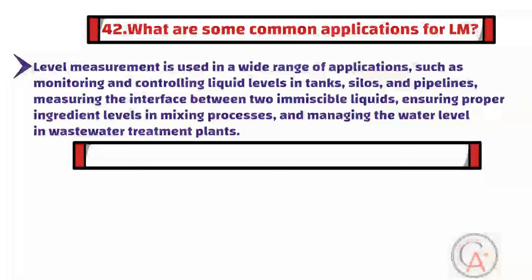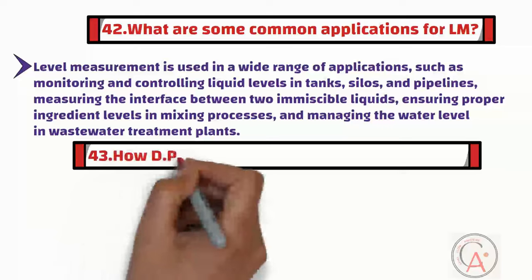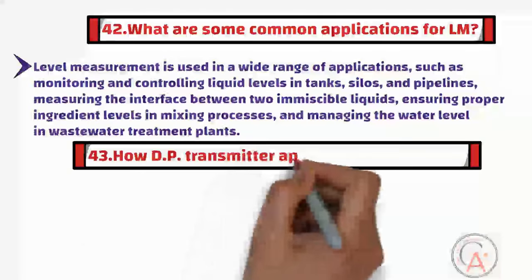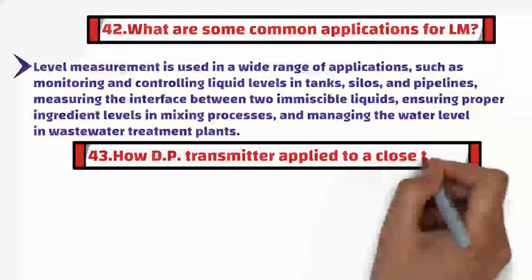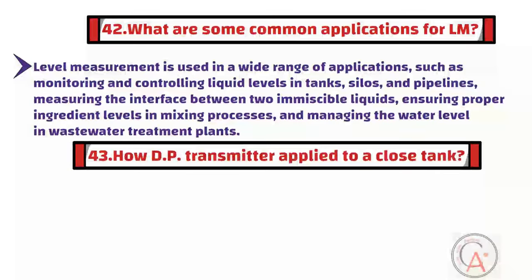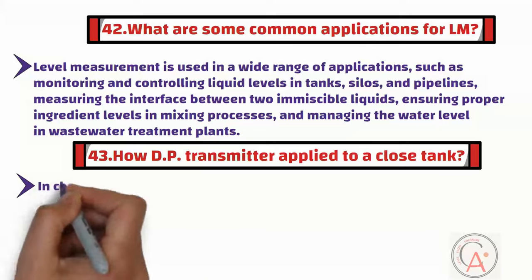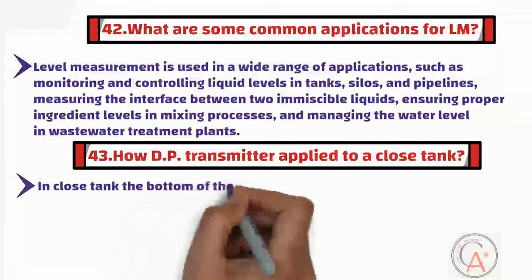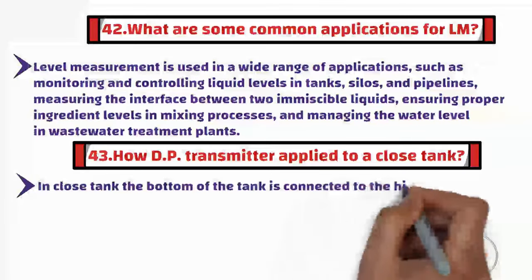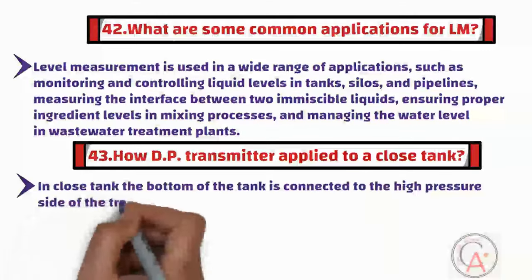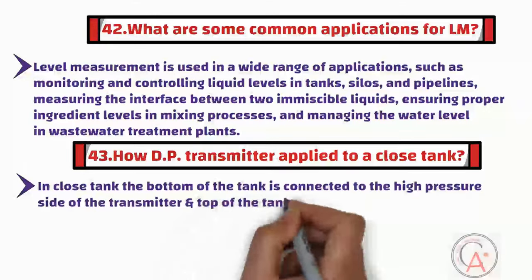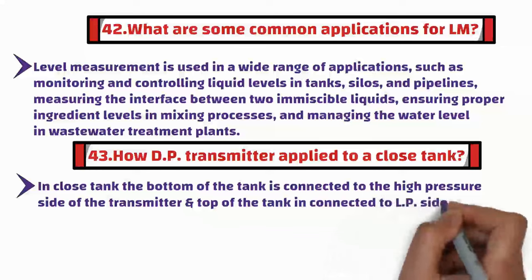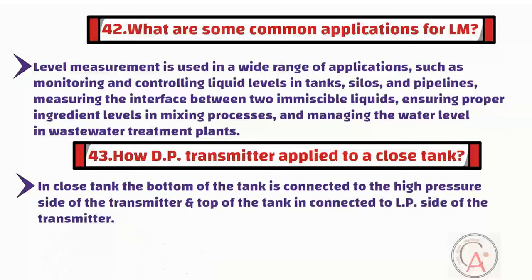Question forty-three is: how is the DP transmitter applied to a closed tank? In a closed tank, the bottom of the tank is connected to the high-pressure side of the transmitter, and the top of the tank is connected to the LP side of the transmitter. In this way the vessel pressure is balanced.